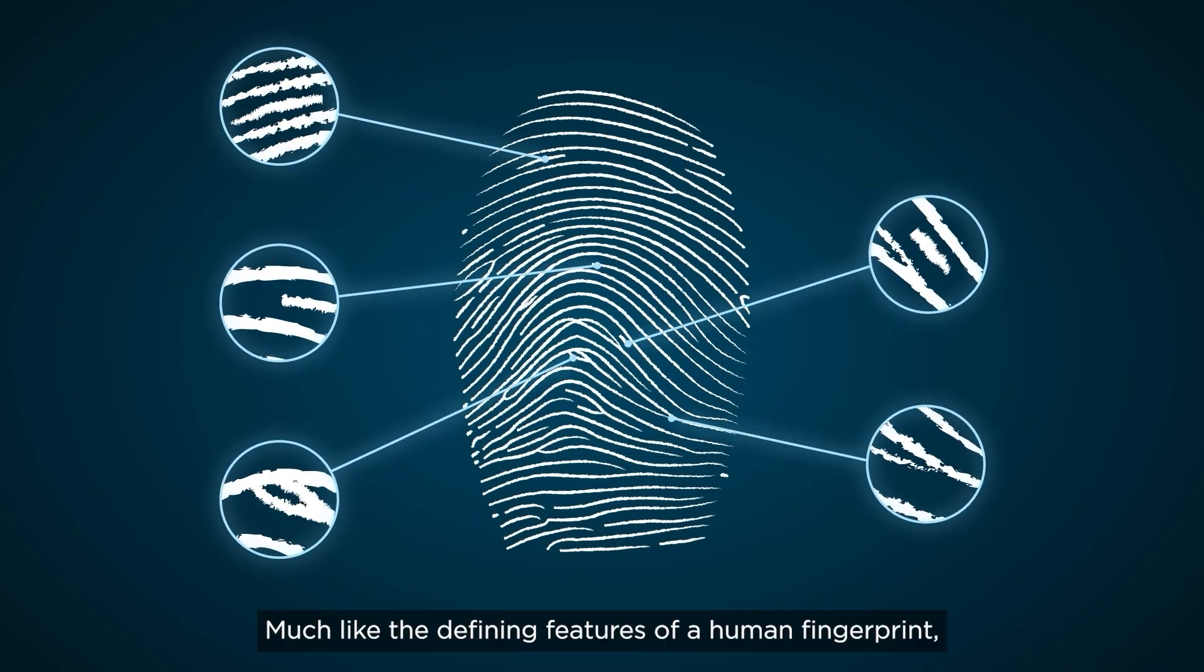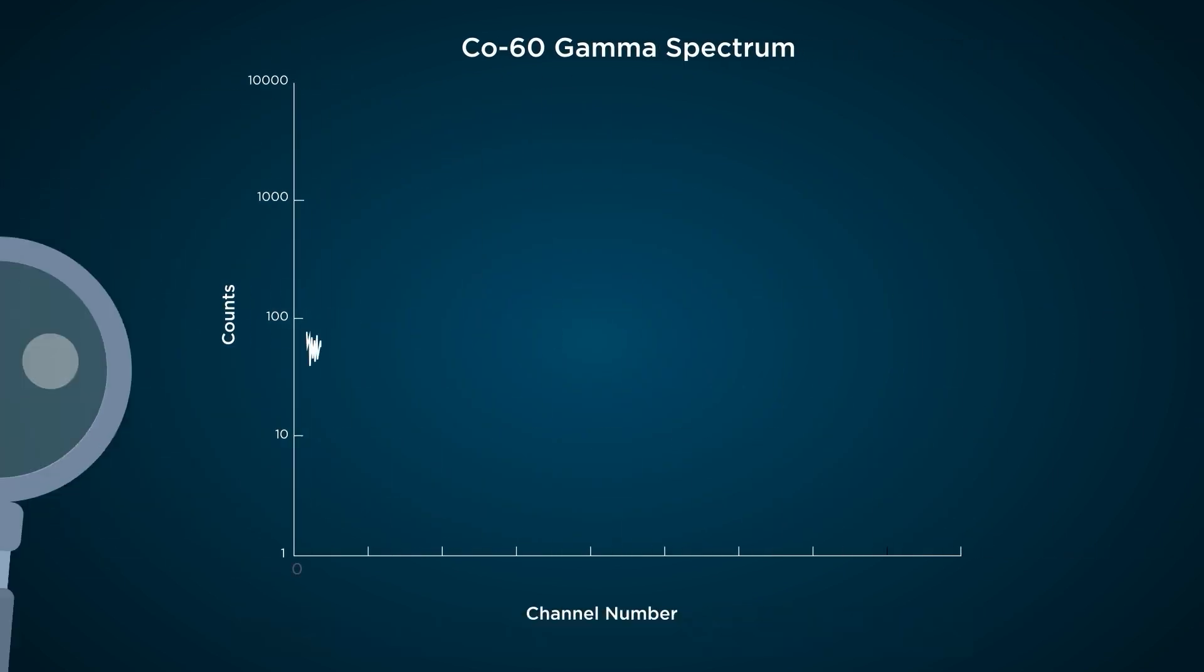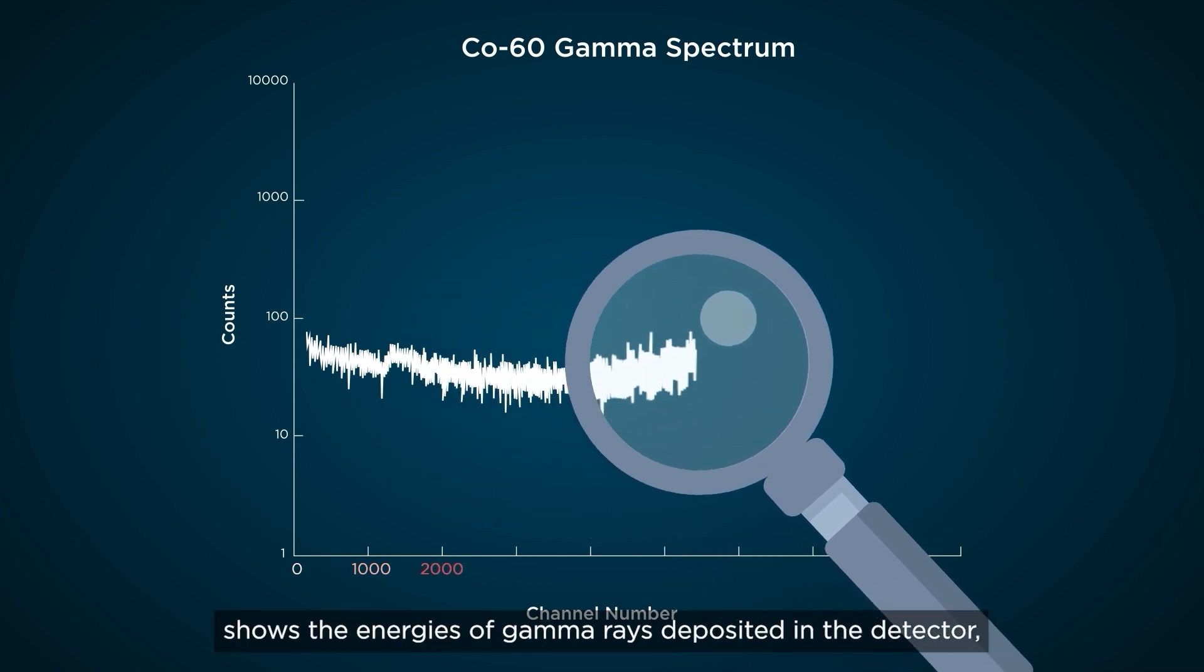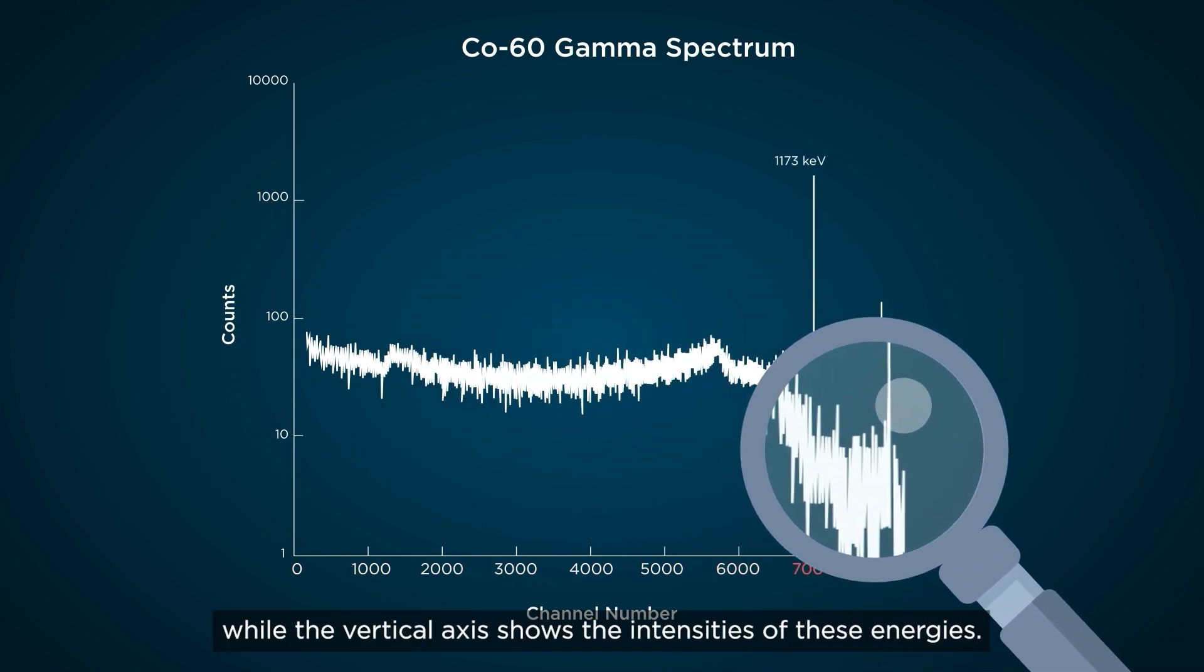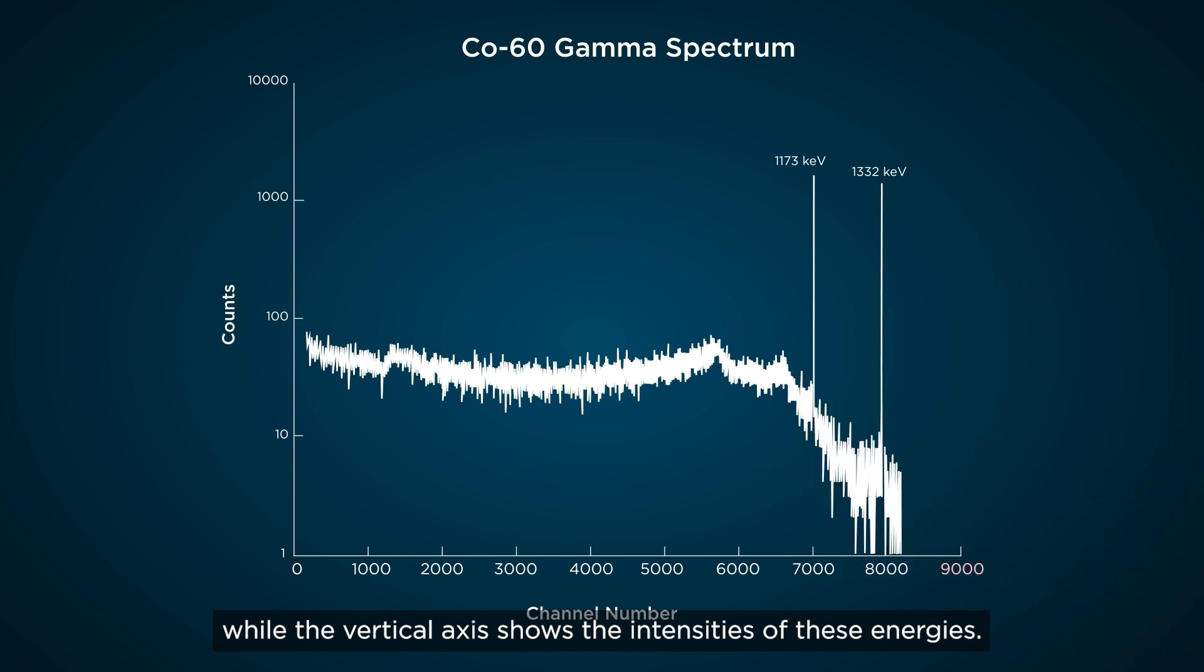Much like the defining features of a human fingerprint, the peaks along this spectrum are unique to each isotope. The horizontal axis shows the energies of gamma rays deposited in the detector, while the vertical axis shows the intensities of these energies.